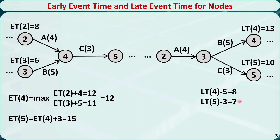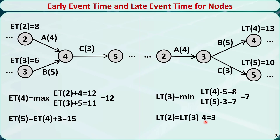So we have two options, and we need to determine which one to choose. We know that both activities B and C can start only if node 3 happened. If node 3 happens at time 8, although activity B can be finished without changing the late time of node 4, activity C is still not finished at time 10 because 8 plus 3 equals 11. So we need to pick the smaller number. Therefore, the late event time of node 3 should be 7. Now the latest time node 3 can happen is at time 7, and the duration of activity A is 4, so the latest time node 2 can happen is 7 minus 4, equal to 3.